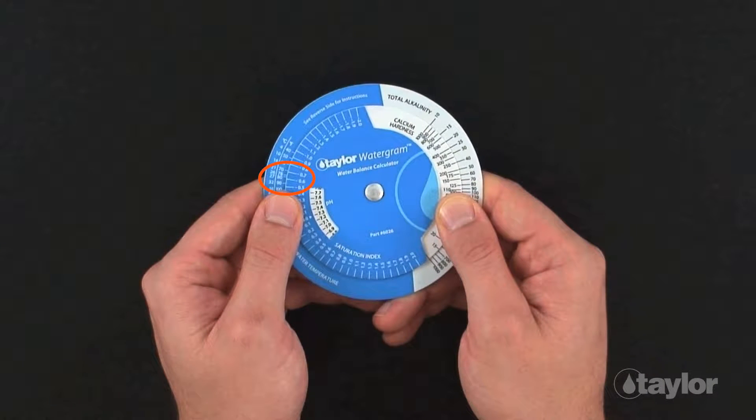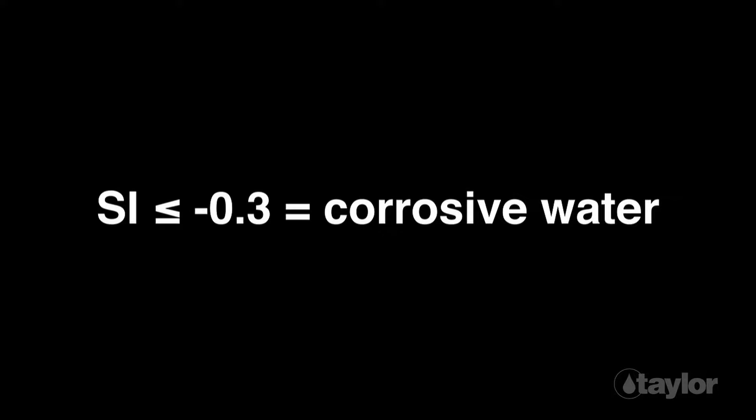The saturation index is the number opposite the temperature. If the SI falls between two values, record the average, which is negative 0.6, indicating the water is corrosive.